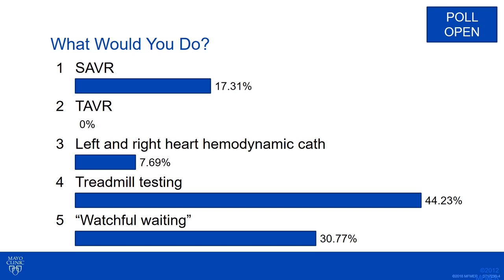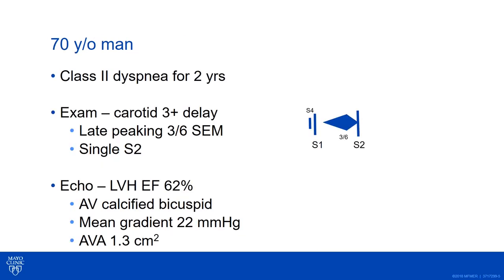I'm going to give you the answer during the talk, not right now. The next question is a 70-year-old man with class 2 dyspnea for 2 years with the same type of physical examination. His echo numbers: EF is 62%, bicuspid valve, mean gradient of 22, and a valve area of 1.3. Same question — how should we treat this individual?